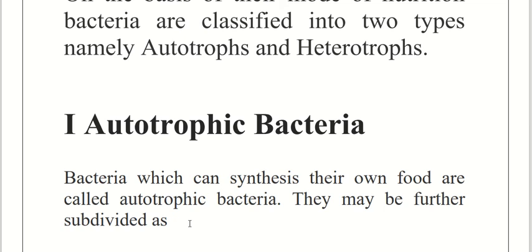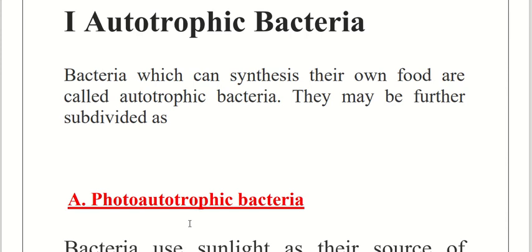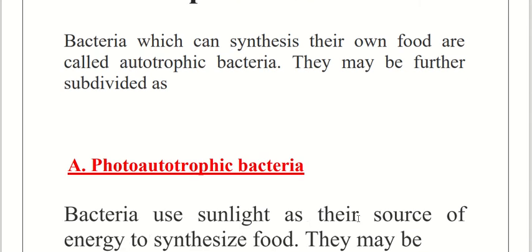Autotrophic bacteria are divided into two classifications. The first is photo-autotrophic bacteria. Photo-autotrophic bacteria use sunlight as their source of energy to synthesize food.